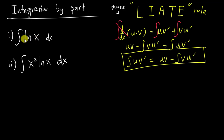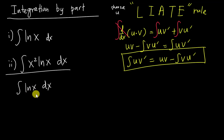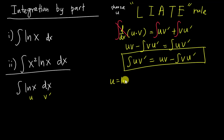Let's look at the easier example first: integrate ln(x). Since ln(x) is only L here, we definitely let it become u. Where is our v'? The v' is basically the dx — there is actually a 1·dx — so we let ln(x) be u and 1·dx be our v'.